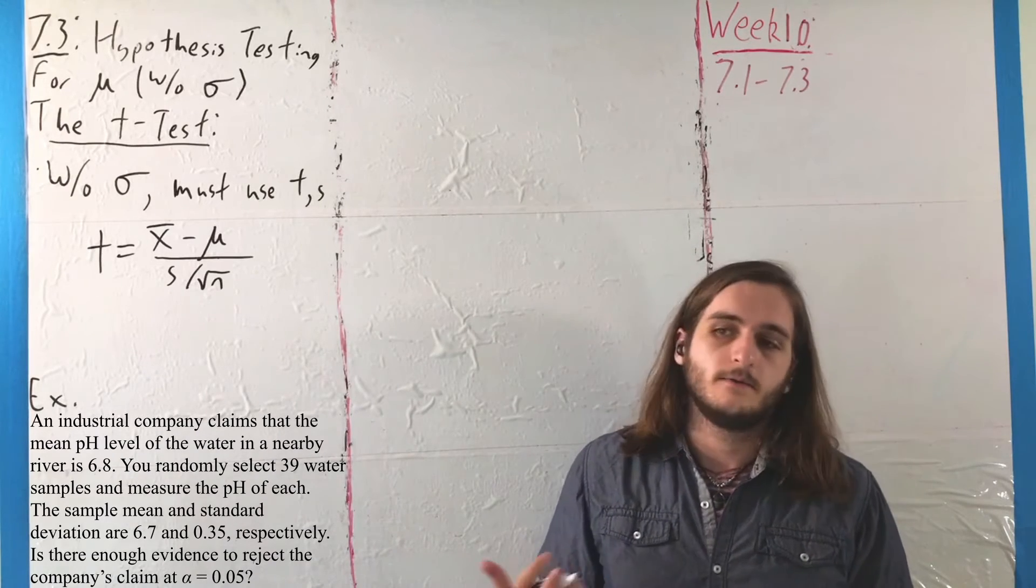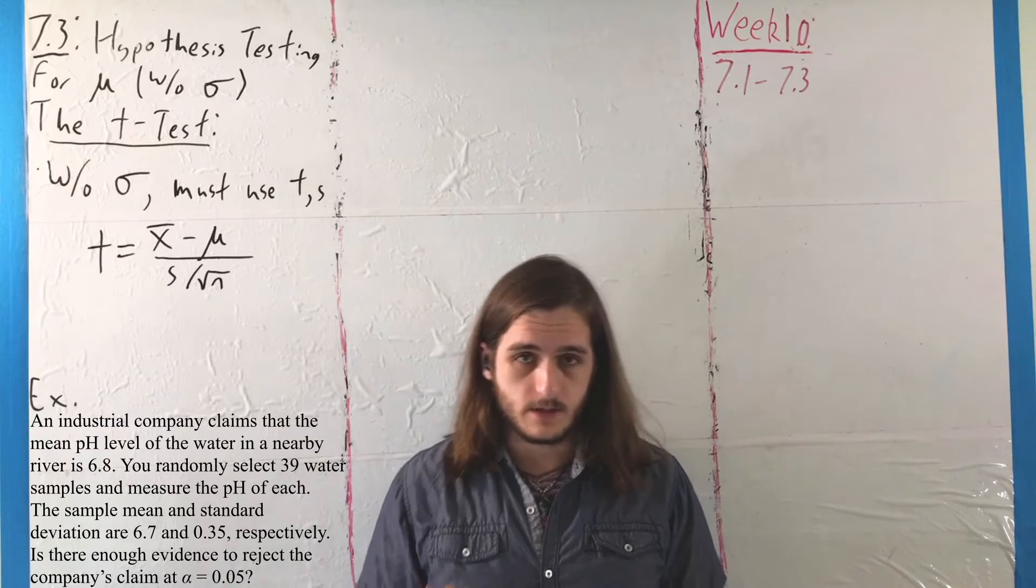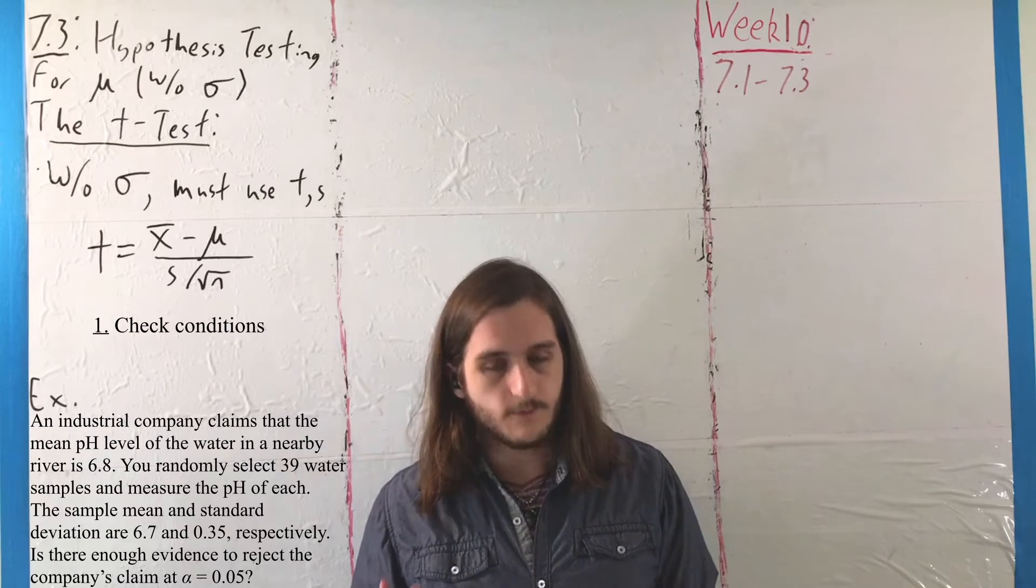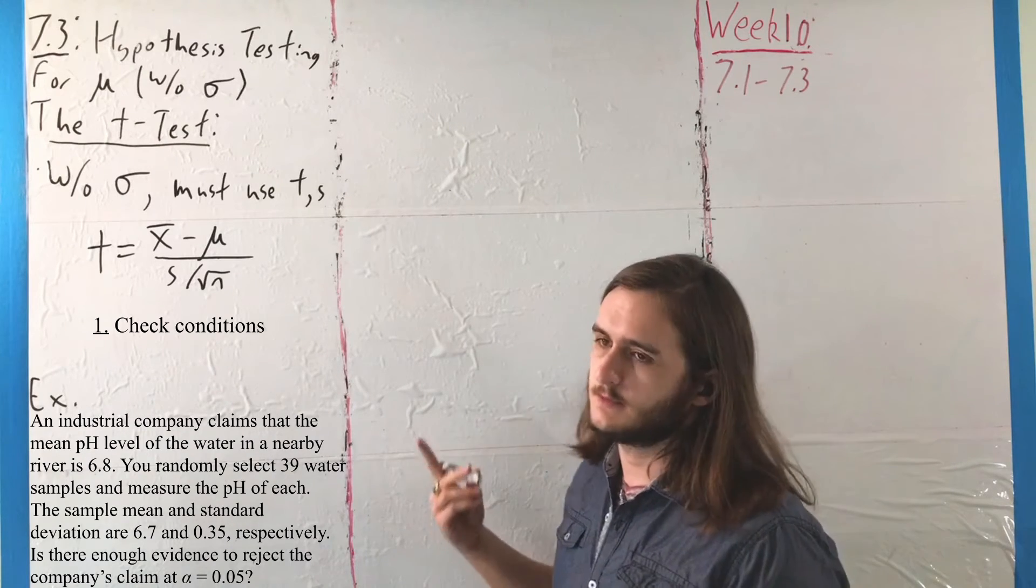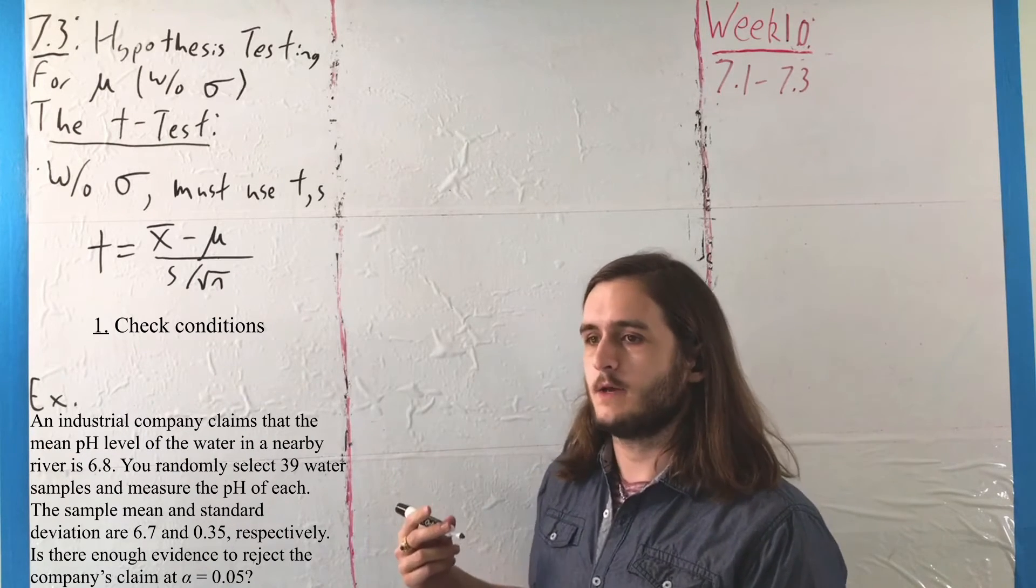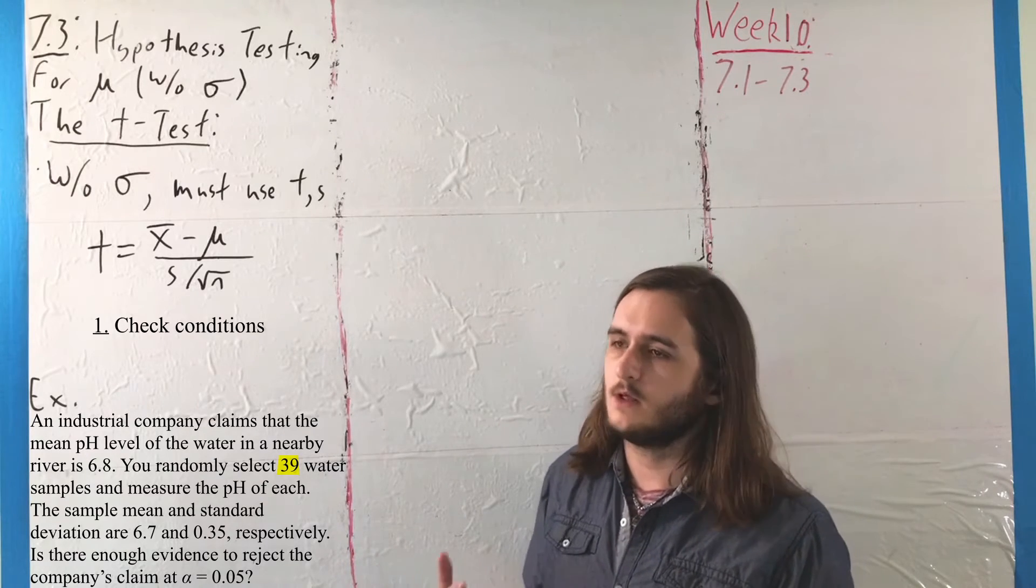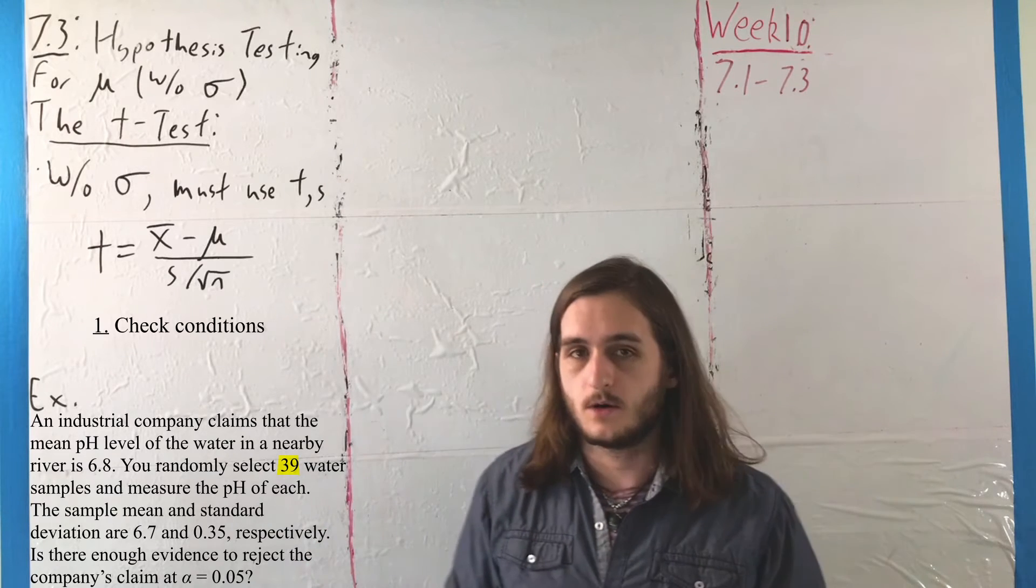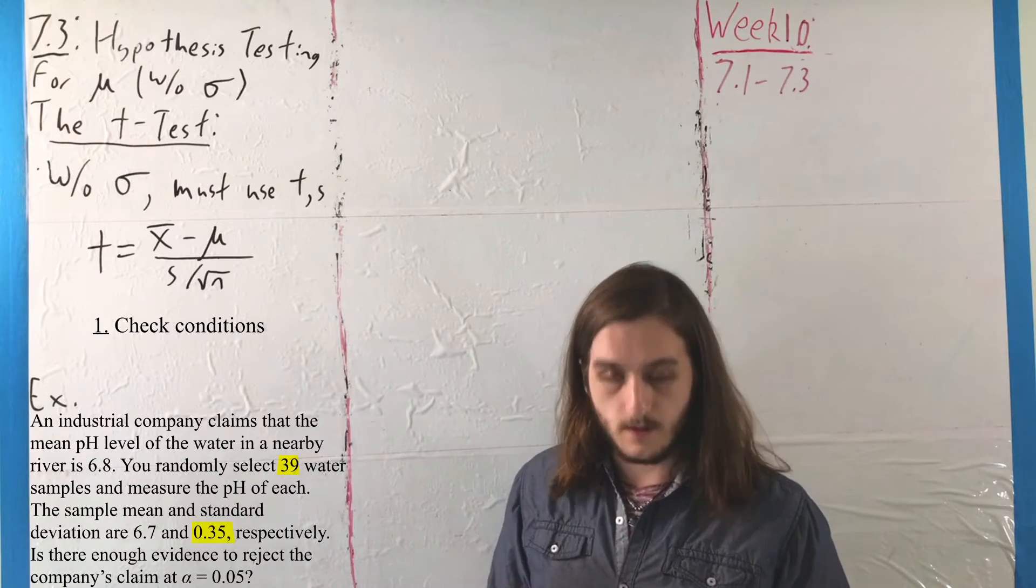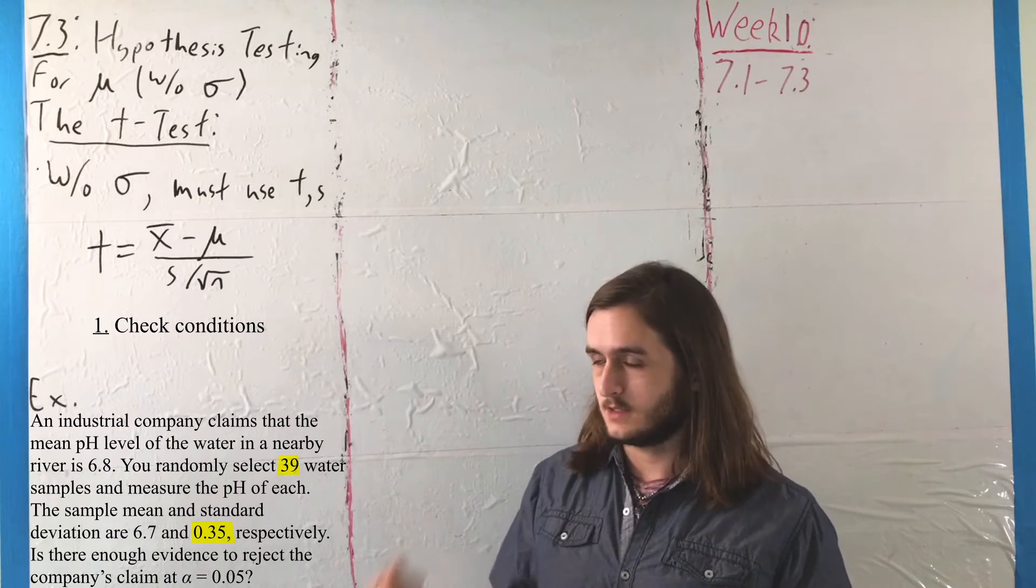That value alpha equals 5% is very much a traditional value we work with. I swear there are other ones, but 5% is the most common that we'll see. For this, we can start with our first couple of steps. If we want to check our conditions, I'm not going to write that down, but we would make sure that we have enough information. Here, we have 39 things in our sample. That's good enough. And combined with our S value of 0.35, we know we're going to be working with a t-test.